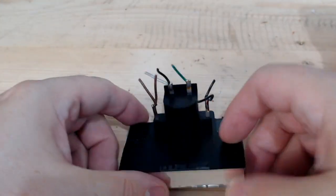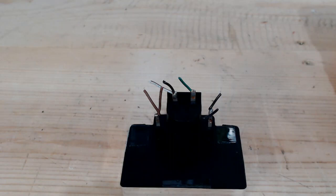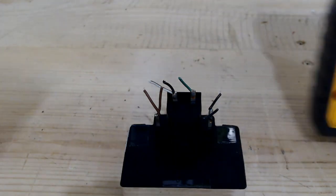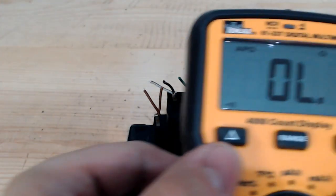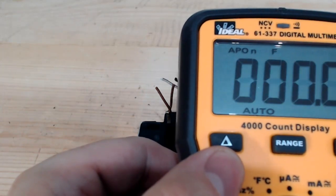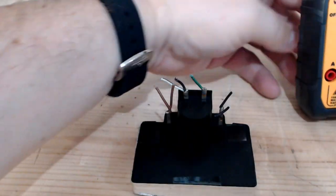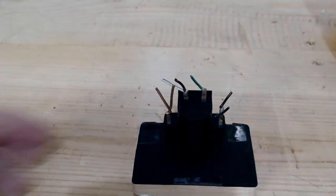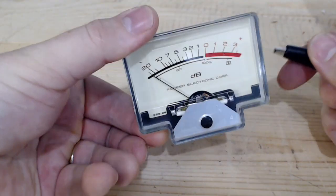On the posts on the back of the meter, take your test leads. I have my multimeter set for the diode test, and I'm not really going to look to see what my meter reading is. I'm just going to see if I can get that meter to jump.